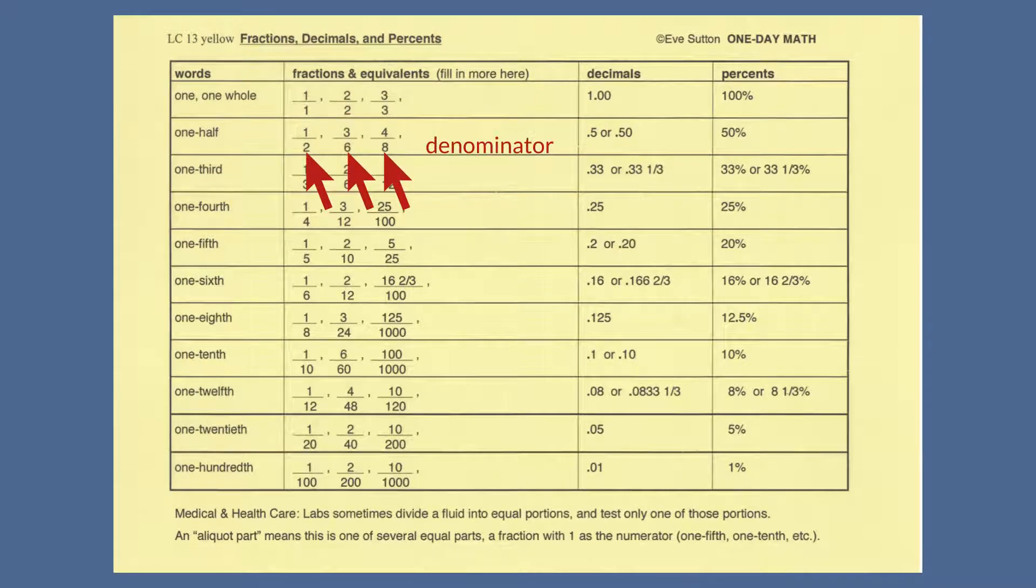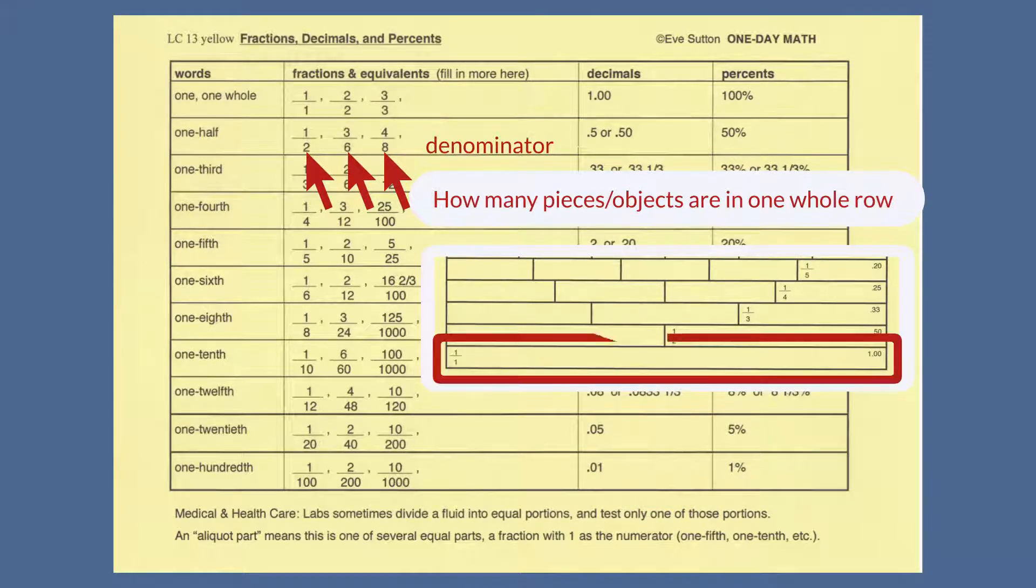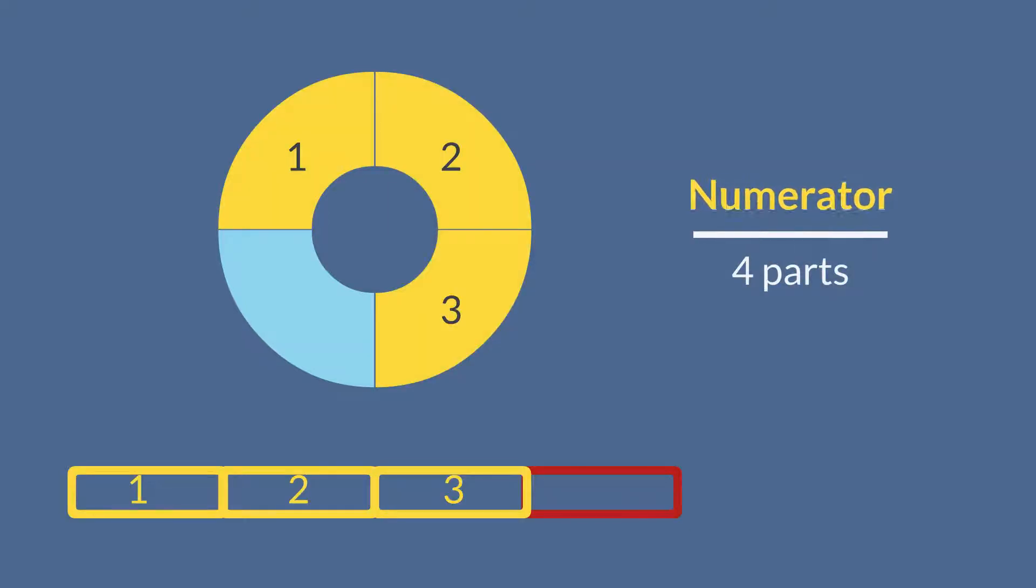The denominator shows how many pieces or objects are in one whole, meaning one whole set, or one whole circle, or one whole row of the brick wall. The pieces are always equal in size, known as aliquot parts. The numerator shows how many of these pieces are being counted.